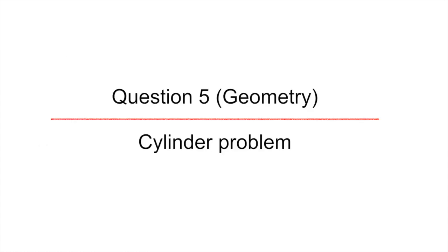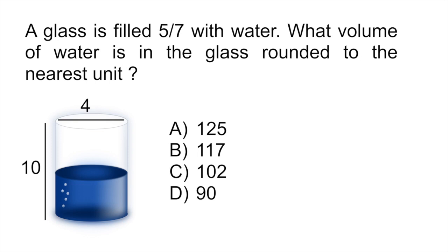And our final problem is a geometry problem regarding cylinders. So don't forget that for geometry, they give you all the formulas that you need. But of course, it is very important for you to actually have an understanding of how to apply these formulas. A glass is filled 5/7ths with water. Let's say it's filled 5/7ths with water. And it asks you, what volume of water is in the glass rounded to the nearest unit.